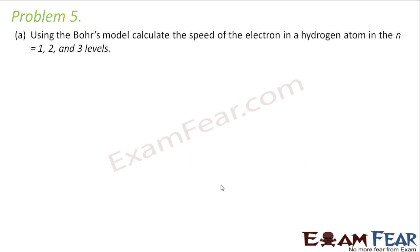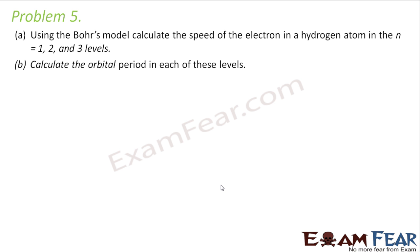Now let us look at problem 5. It asks: using the Bohr's model, calculate the speed of the electron in a hydrogen atom in n equal to 1, 2, and 3 levels. Also calculate the orbital period in each of these levels.